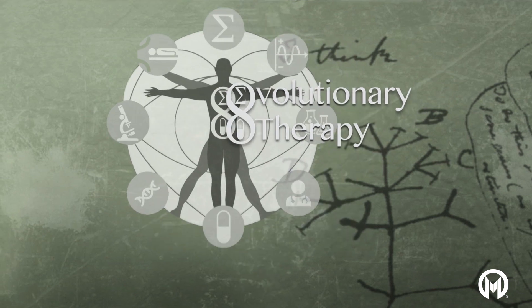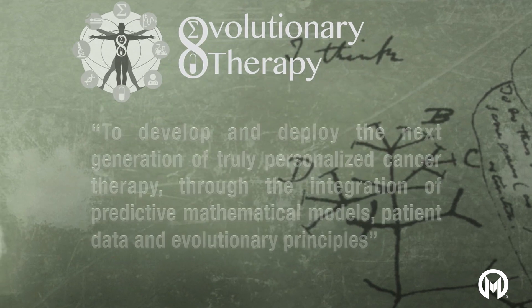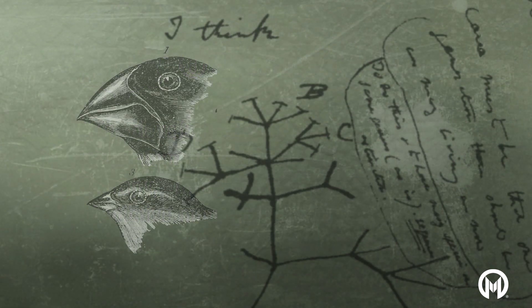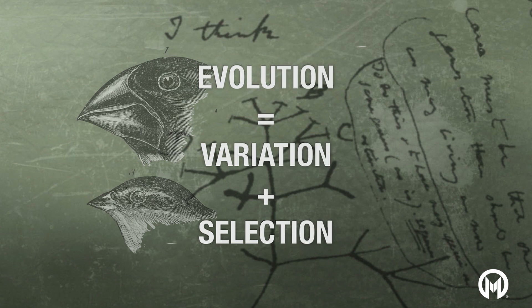Evolutionary therapy and the whole principle behind it is really to develop and deploy the next generation of truly personalised cancer therapy through the integration of predictive mathematical models, patient data, and crucially evolutionary principles. You're probably asking yourself what is an evolutionary principle. Well, Darwin provides a really clear recipe for evolution: it requires just variation and selection — those two elements.